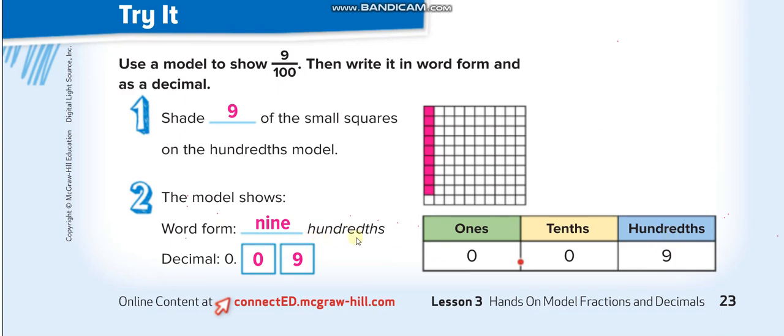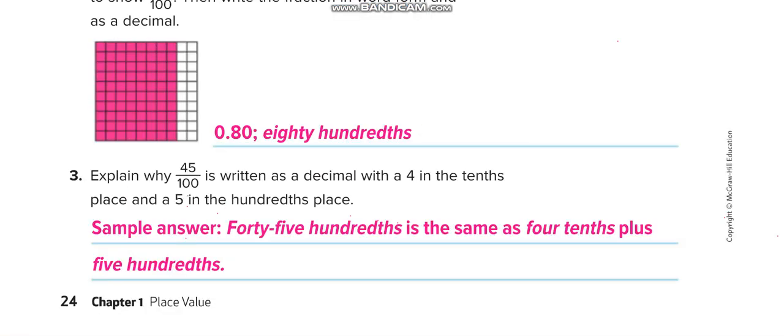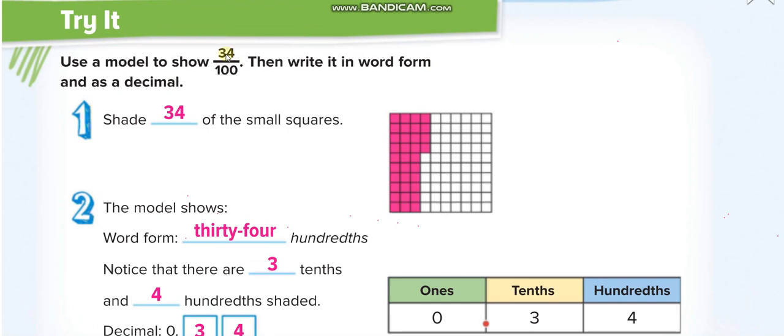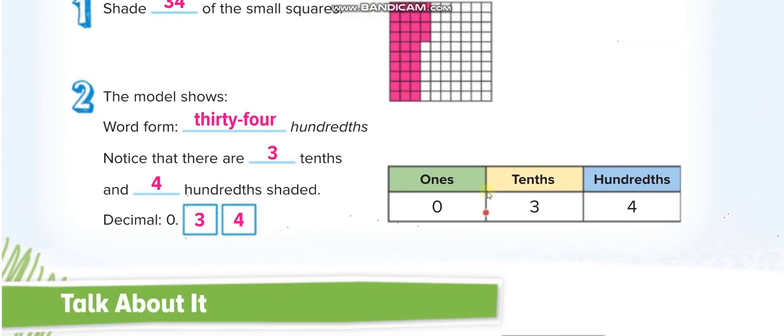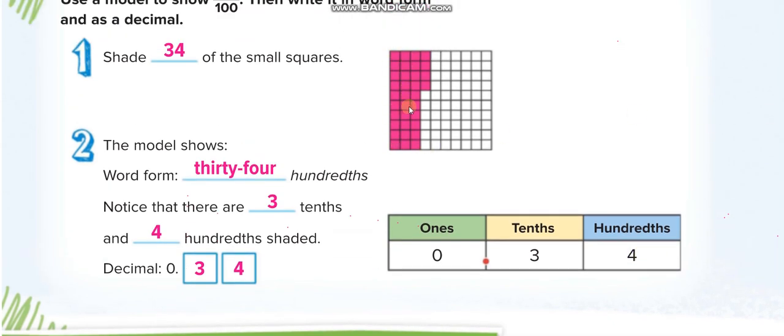Now 34 over 100. We divided one whole into 100 parts, and out of 100 parts we have 34 shaded. The decimal is 0.34. You can see here 3 tenths are completed, so 3 at the tenths place, and 4 of these small boxes means hundredths. This whole line means tenths. So we have 3 tenths and 4 hundredths, making 0.34. We read it as 34 hundredths.